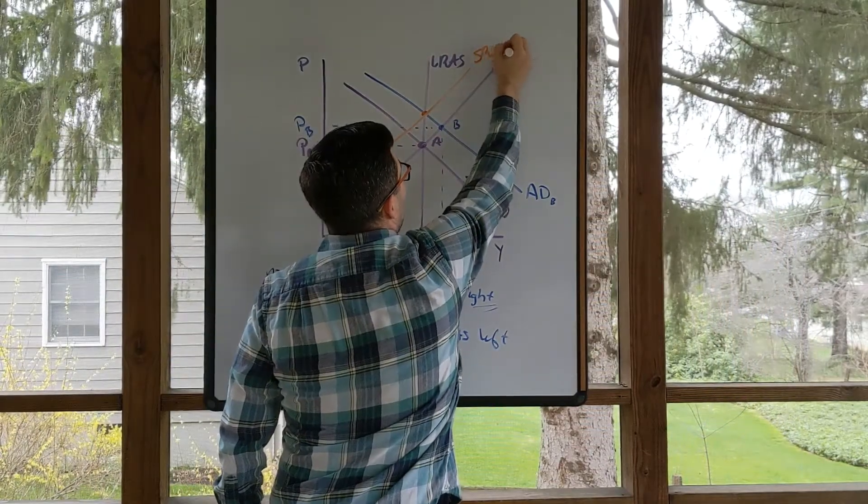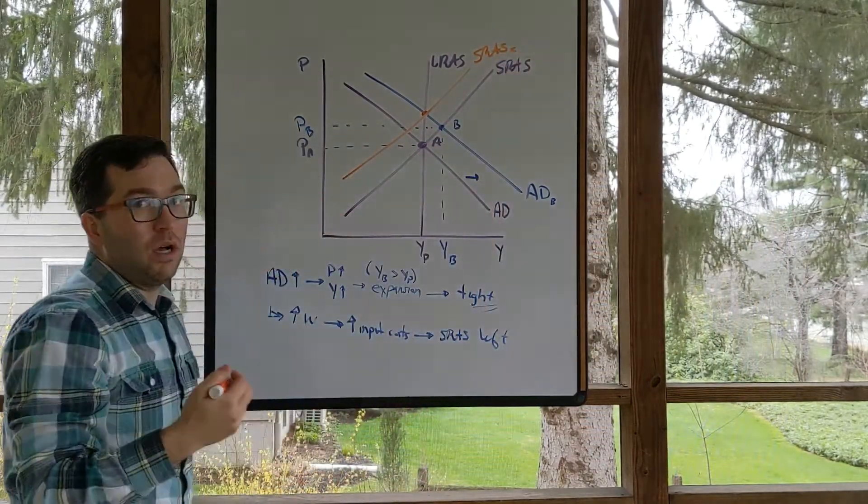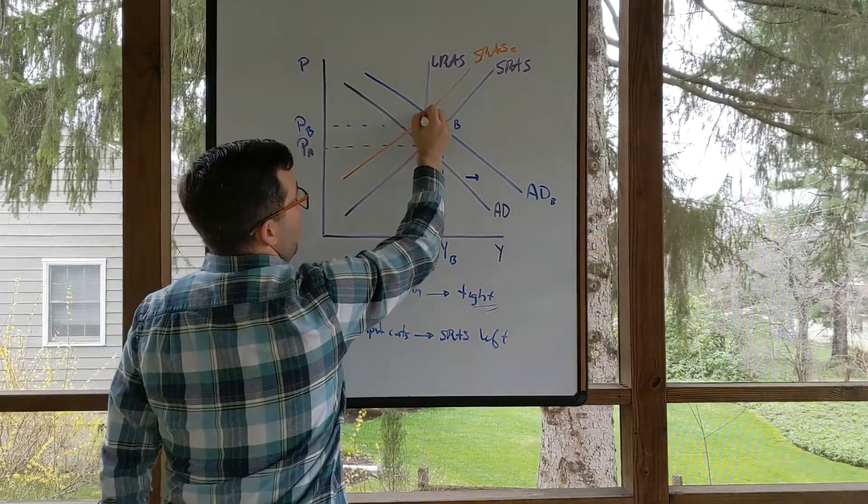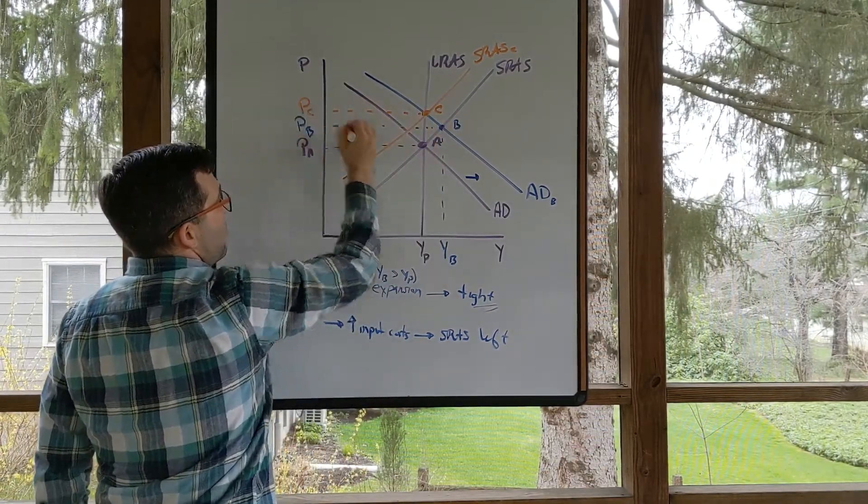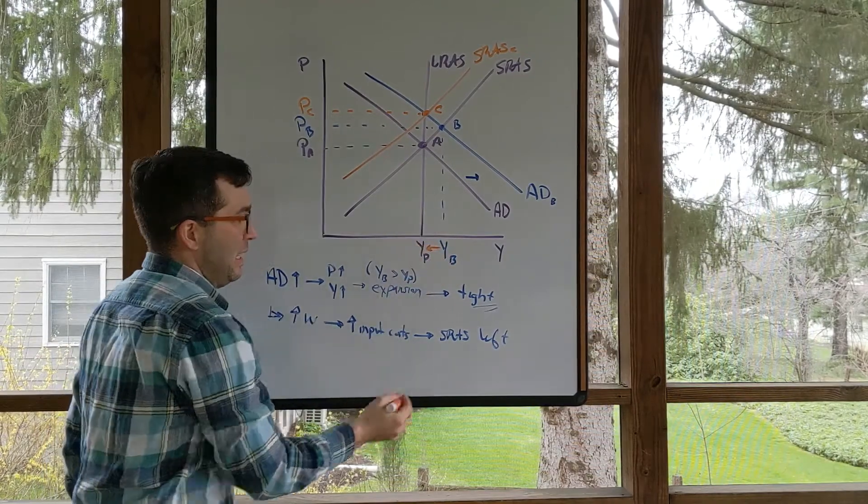So we have our new short-run aggregate supply, just like our last video, we'll call this point C. We have this right here as point C, GDP with higher prices, and we move back to potential GDP.